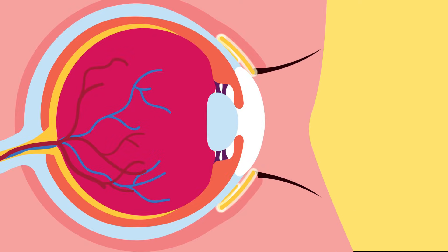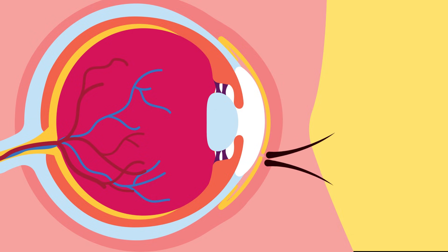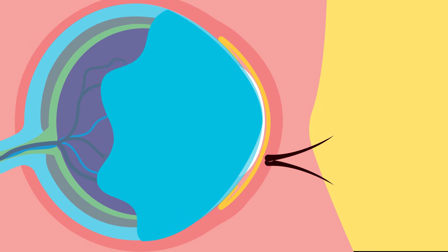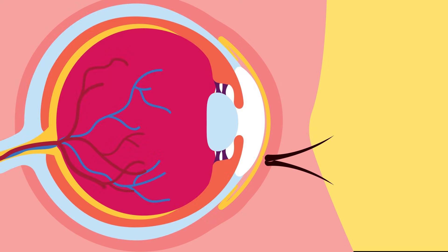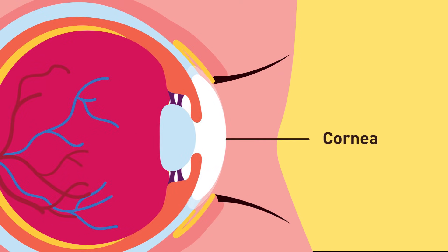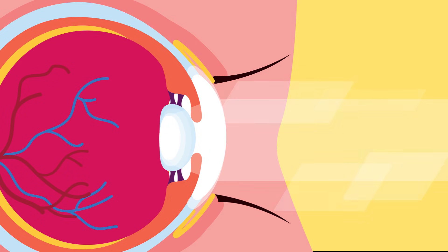Conjunctiva is the thin epithelium covering the surface of the eyeball. It secretes mucus to lubricate, clean, and maintain moisture. Next comes the cornea, which is a transparent, curved layer that bends light to converge at the lens.